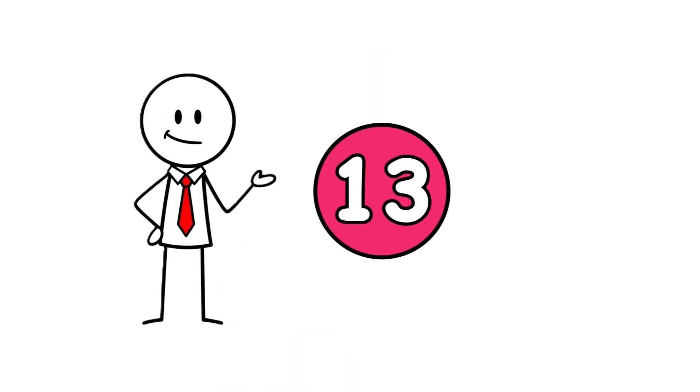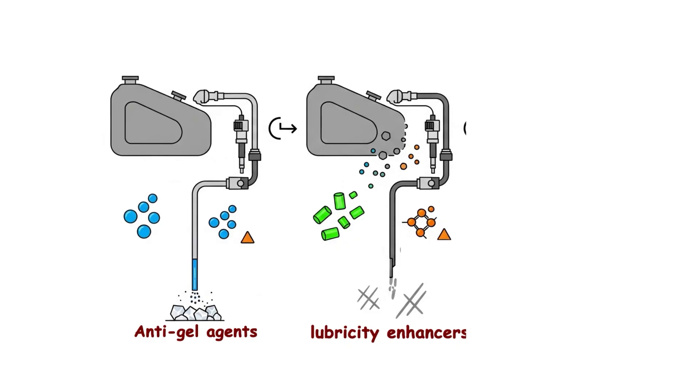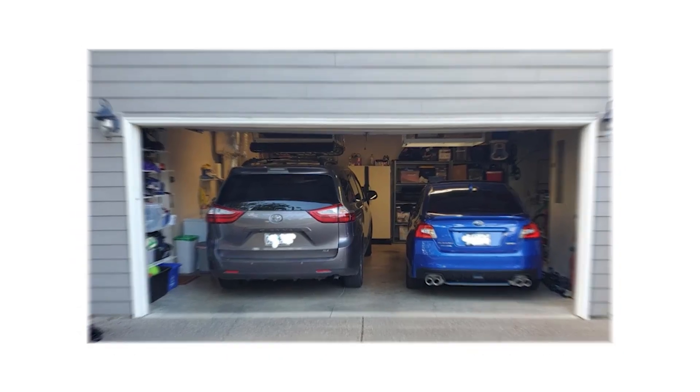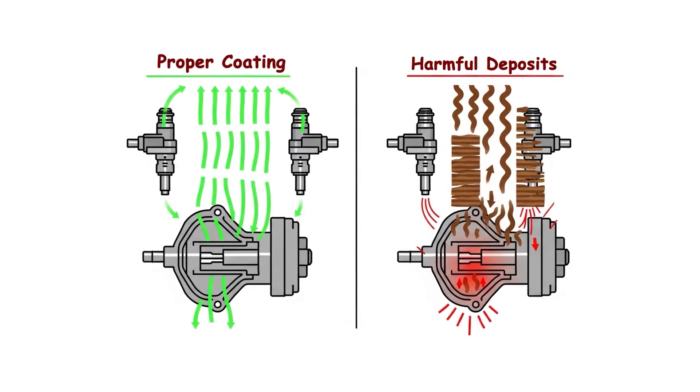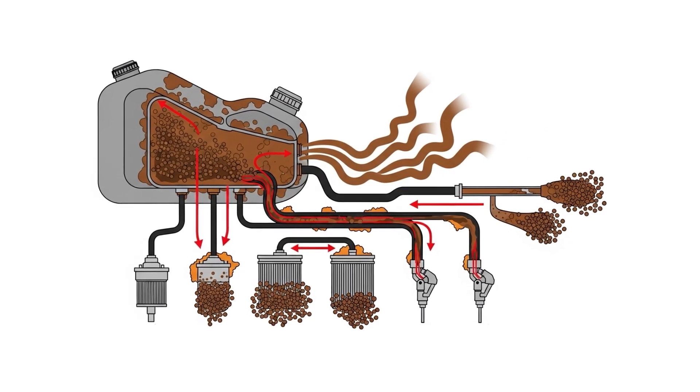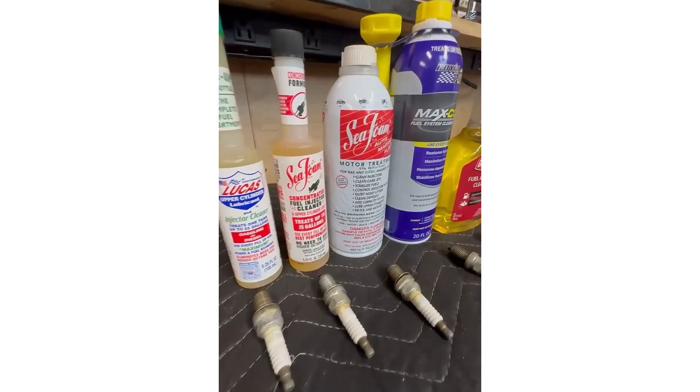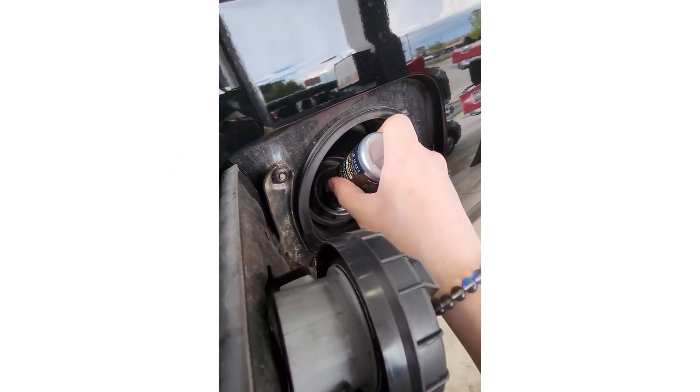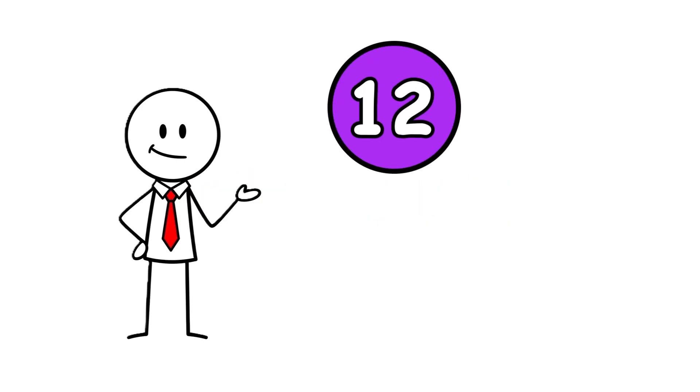Mistake number 13 is using expired or degraded fuel additives. It sounds harmless, but it's a silent killer for modern diesels. Anti-gel agents, lubricity enhancers, cetane boosters, all of them break down over time, especially if they've been sitting in your garage through summer heat and winter cold. When these additives expire, anti-gel won't prevent wax crystals from forming. Lubricity additives can actually create harmful deposits, and biocides lose their punch, letting microbial growth take over your tank. The result? Clogged fuel filters, damaged injectors, and fuel system repairs that cost thousands. The fix is simple: always check expiration dates, rotate your stock, and dose according to the label before the fuel gets cold. Using expired additives is often worse than using none at all, because you get a false sense of security right before everything fails.